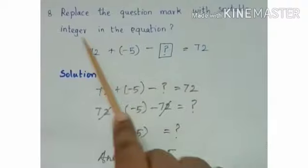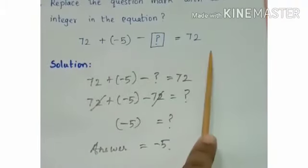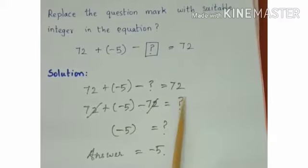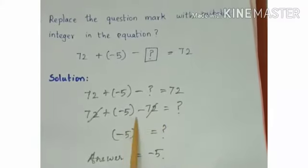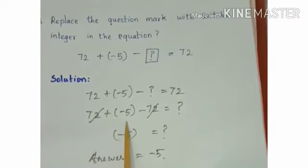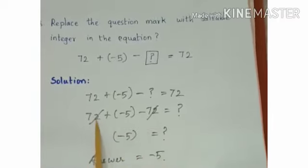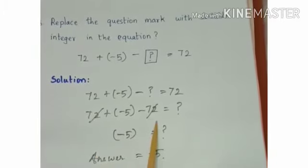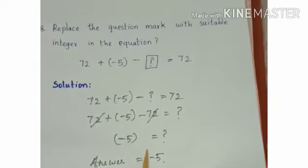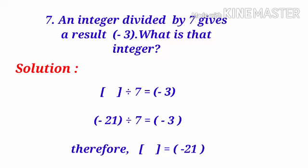Replace the question mark: 72 plus minus 5 minus question mark equals 72. Bringing 72 to the left and question mark to the right: 72 plus minus 5 minus 72 equals question mark. Plus 72 and minus 72 cancel out, so question mark equals minus 5. An integer divided by 7 gives minus 3 — the integer is minus 21.